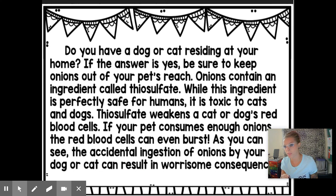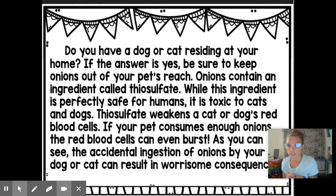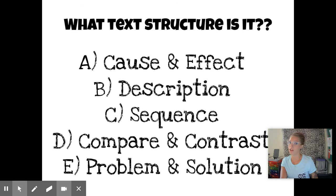Now I want to practice reading some examples and I want you to try to spot keywords that help you determine if it's going to be description, cause and effect, problem and solution, sequential order, or compare and contrast. 'Do you have a dog or cat residing at your home? If the answer is yes, be sure to keep onions out of your pet's reach. Onions contain an ingredient called thiosulfate. While this ingredient is perfectly safe for humans, it is toxic to cats and dogs. Thiosulfate weakens a cat or dog's red blood cells. If your pet consumes enough onions, their red blood cells can even burst. The accidental ingestion of onions by your dog or cat can result in worrisome consequences.' That's cause and effect — the effect is your dog or cat getting sick, and the cause was eating those onions. It's not really problem and solution because it's not like there's an overabundance of animals eating onions and you're trying to find a solution.